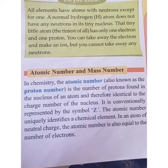In every atom, the number of protons and the number of electrons are always the same — it is a rule. The number of protons inside the nucleus will always be equal to the number of electrons around the nucleus. So the atomic number can also be defined as the number of electrons around the nucleus.